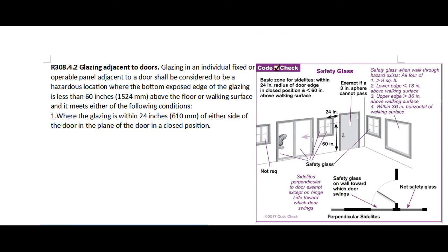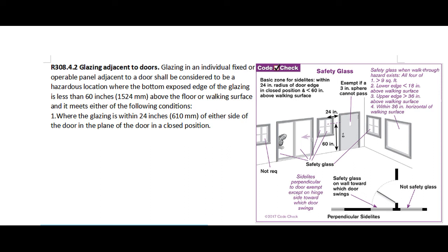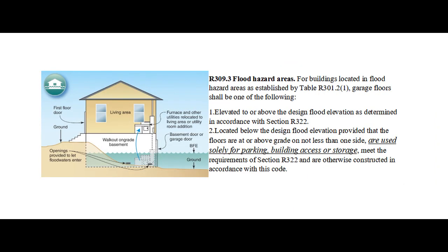R308.4.2 Glazing adjacent to doors: Glazing in an individual fixed or operable panel adjacent to a door shall be considered to be a hazardous location where the bottom exposed edge of the glazing is less than 60 inches above the floor or walking surface, and it meets either of the following conditions: 1. Where the glazing is within 24 inches of either side of the door, in the plane of the door, in a closed position. R309.3 Flood Hazard Areas: For buildings located in flood hazard areas as established by Table R301.2-1, garage floors shall be one of the following: 1. Elevated to or above the Design Flood Elevation, as determined in accordance with Section R322. 2. Located below the Design Flood Elevation, provided that the floors are at or above grade on not less than one side, are used solely for parking, building access, or storage, meet the requirements of Section R322, and are otherwise constructed in accordance with this code.